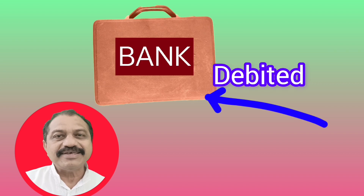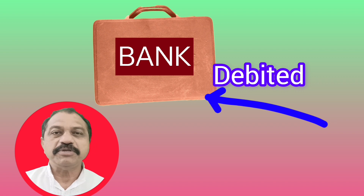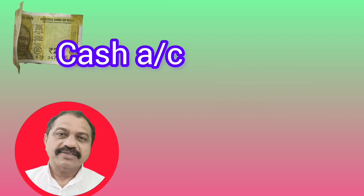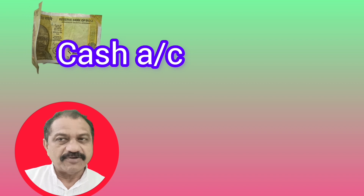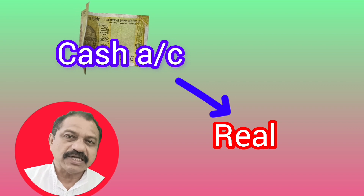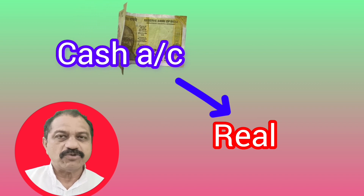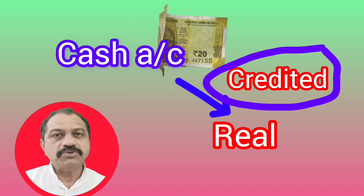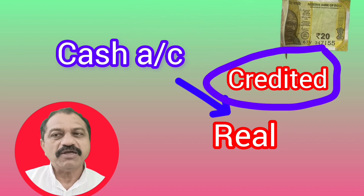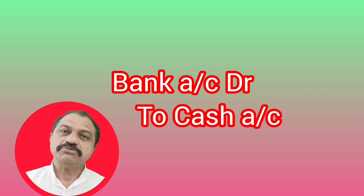Here, the bank received cash, therefore bank account is debited. Cash account is a real account, so the rule of real accounts applies: debit what comes in and credit what goes out. Cash goes out of the business, therefore cash account is credited. The journal entry is: Bank Account Dr. To Cash Account.